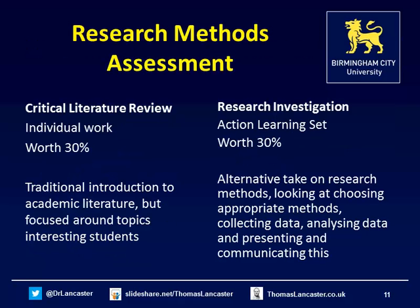The assessment is based around two parts for the research methods section. There's a critical literature review — I always add the word 'critical' because it encourages students to think differently, as literature is new to them. It's an individual piece of work, checked for plagiarism, where students use five to ten pieces of literature to construct an argument. Students are given a choice of topics where literature is available and can come up with their own sub-niche within that area — based around technology and current events — with accessible literature and no complicated maths.